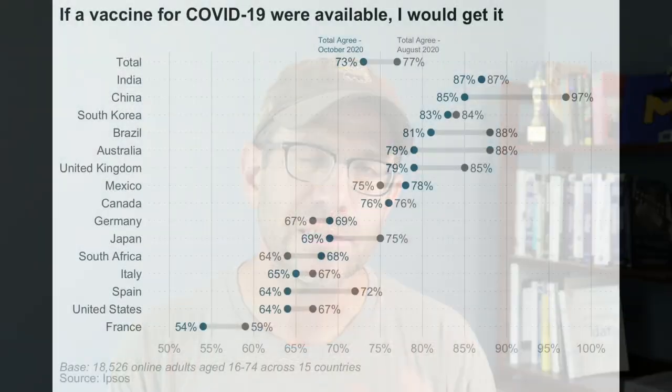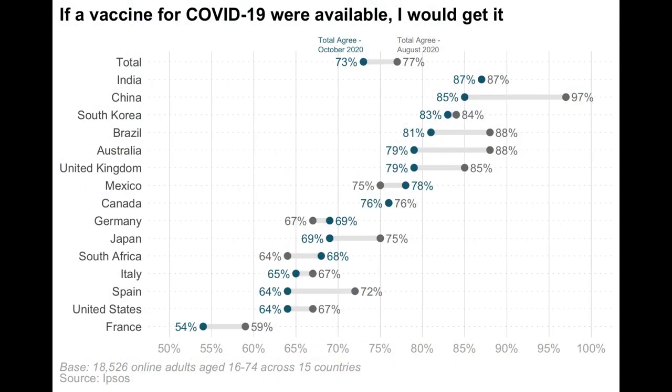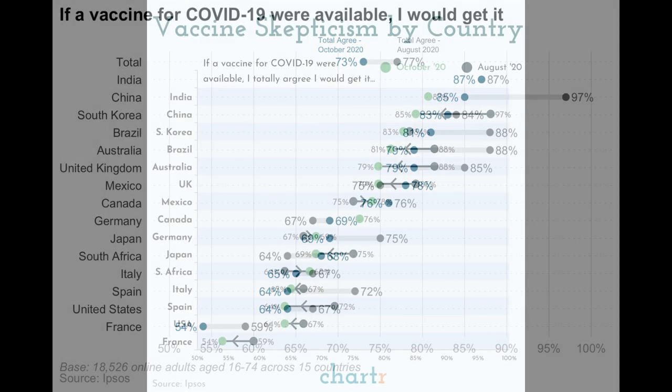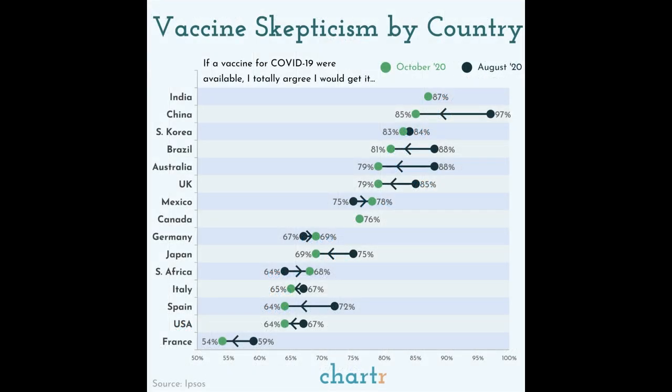My goal for this episode is to critique these two figures so that in the next episode we can do a mashup between those two figures to take the good things and make an improved dumbbell chart. Hey folks, I'm Pat Schloss and this is Code Club.